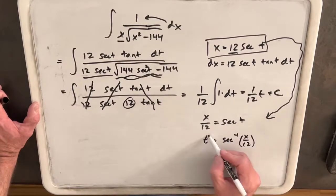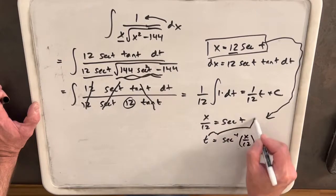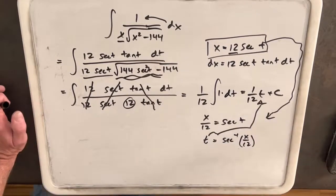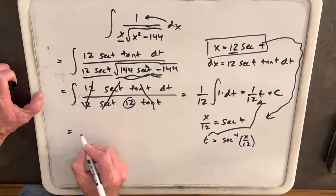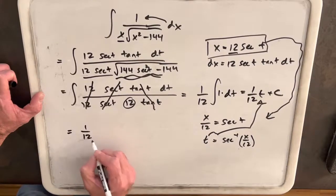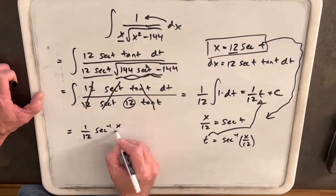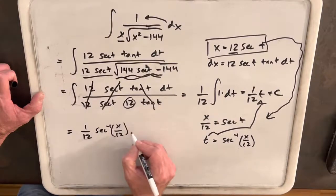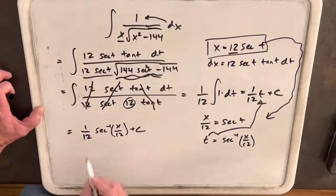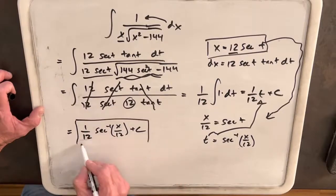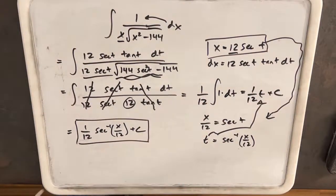To finish this off, all we need to do is substitute back. Our final answer is 1/12 secant inverse x over 12 plus c. We're done. I got this problem from my quiz integrals with roots. I'll provide a link in the description. Thanks for watching.